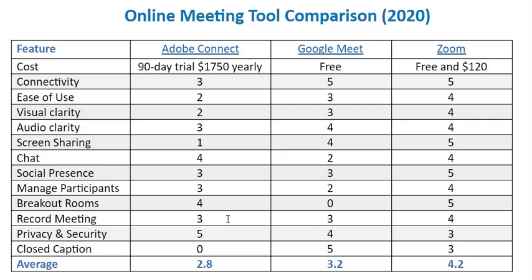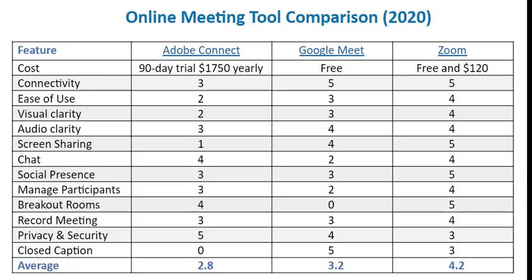In terms of recording meetings, Adobe Connect is pretty good — it allows you to record meetings; however, the playback is slow, awkward, and doesn't really flow well. Google Meet also allows you to record meetings, but you have to pay extra for that. Zoom allows you to record meetings and it is the only tool that allows you to record breakout room sessions.